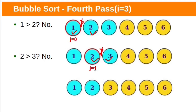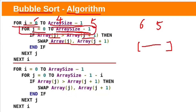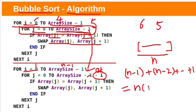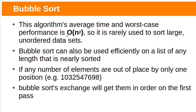Similarly, in the fourth pass we can terminate the inner loop when j reaches 1. As the number of passes increases, the number of comparisons in the inner loop decreases. So the inner loop can be modified to: j from 0 to array size minus 1 minus i. If array size is n, then n minus 1 passes are required. In the first pass, n minus 1 comparisons are needed; in the next pass, n minus 2; and so on until the last pass requires only 1 comparison. The total is n(n−1)/2, so the time complexity of bubble sort is O(n²).